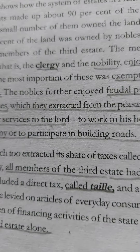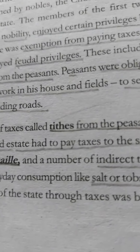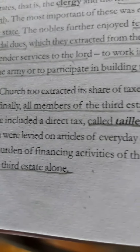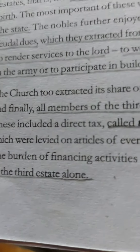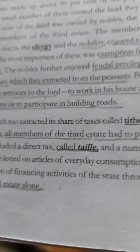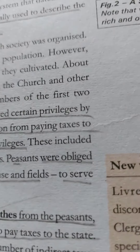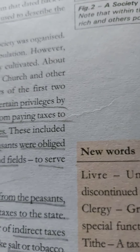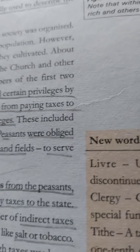The church extracted its share of taxes called tithes from the peasants, and all members of the Third Estate had to pay taxes to the state. These included a direct tax called taille and a number of indirect taxes levied on articles of everyday consumption like salt or tobacco. The burden of financing the state's activities through taxes was borne by the Third Estate alone — they even had to pay the taxes of the first and second state persons.